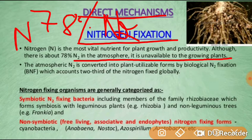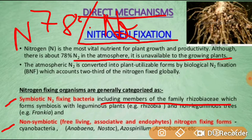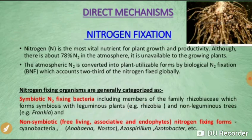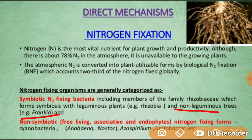Nitrogen-fixing bacteria are of two types: symbiotic nitrogen-fixing bacteria and non-symbiotic nitrogen-fixing bacteria. Symbiotic nitrogen-fixing bacteria include members of the family Rhizobiaceae, which form symbiosis with leguminous plants and non-leguminous trees like Frankia.